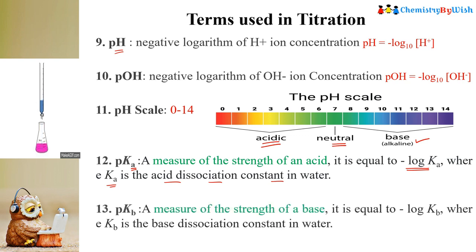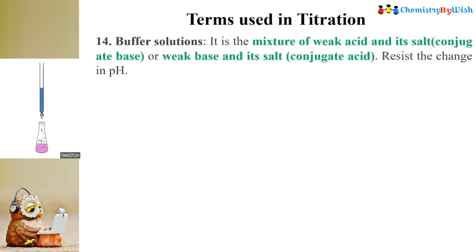The next term is pKb, where B stands for base. This term is used to measure the strength of a base, and it is equal to −log Kb, where Kb is the base dissociation constant in water. So pKa is used to determine acid strength and pKb is used to determine base strength.